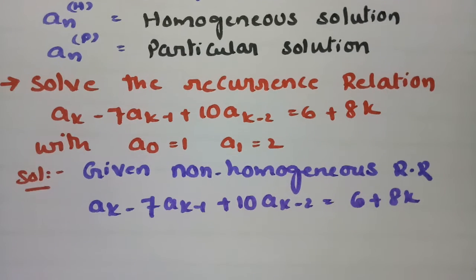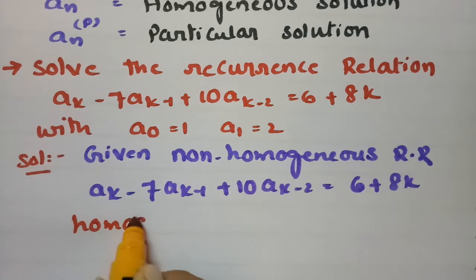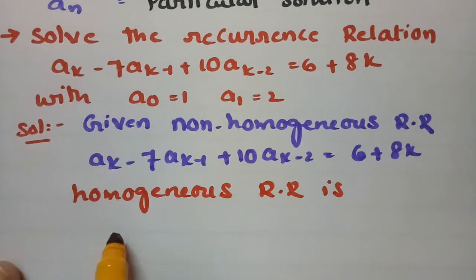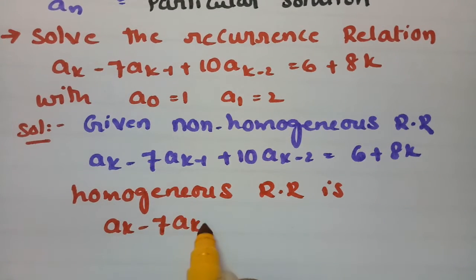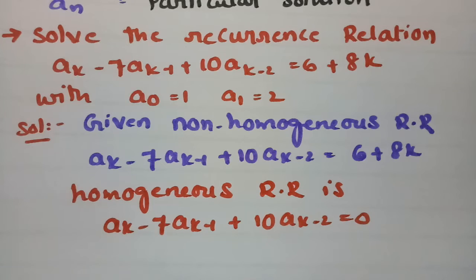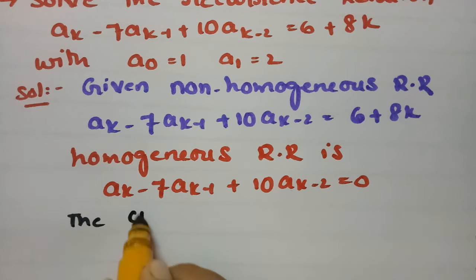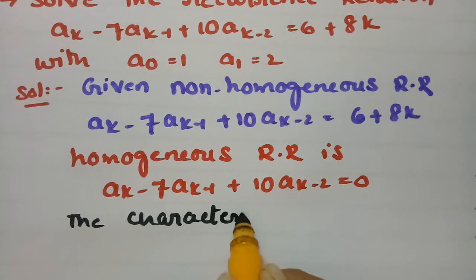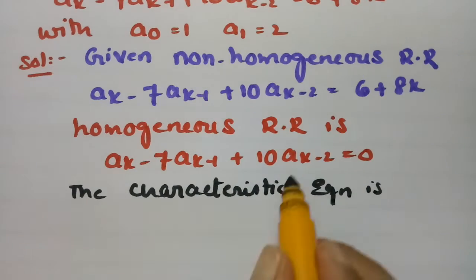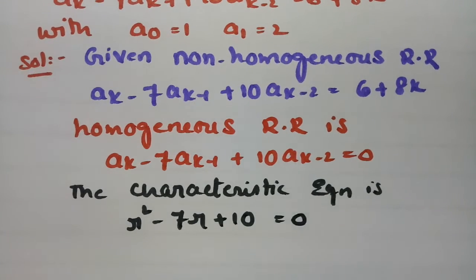Now we need the homogeneous recurrence relation, which is Ak - 7·Ak-1 + 10·Ak-2 = 0. Now we have to write the characteristic equation. Since this is of order 2, the characteristic equation is R² - 7R + 10 = 0.